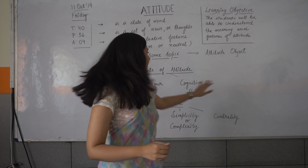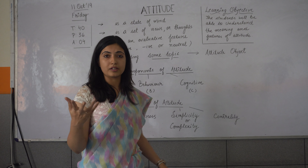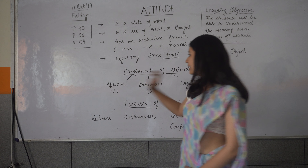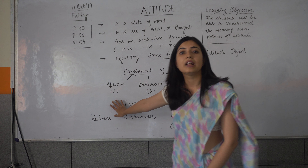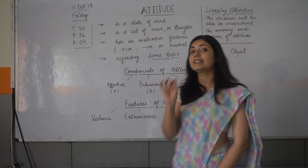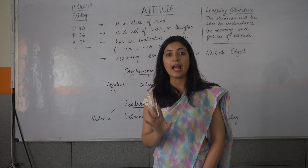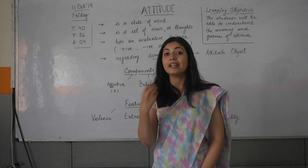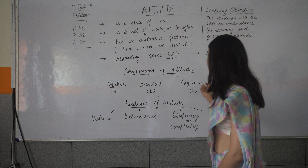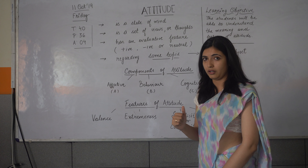And C is for cognitive, which is related to our thoughts. So the three components of attitude are A, B, C — that is affective, the emotional component; behavioral, that is the tendency to act. It is not necessary to act, but there is a strong tendency to act. And C is cognitive, which means the thoughts are also involved.